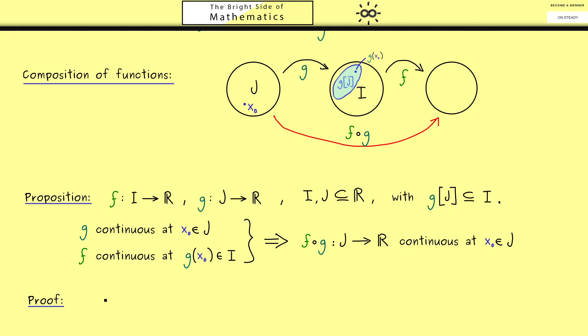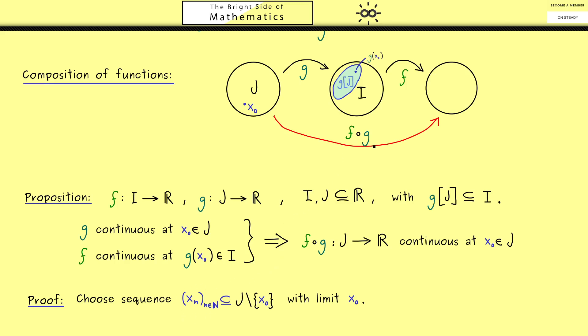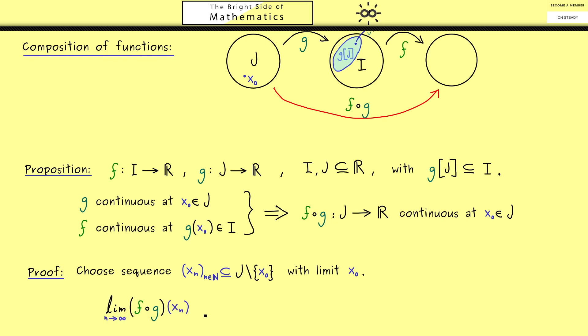Still, I want to use the sequence definition of continuity here. Hence, let's choose a sequence (xₙ) with members from J and limit x₀. And now we consider the limit of the values of xₙ under the composition f after g. Next we show that this exists and is exactly f after g of x₀. First let's use the definition of the composition, so we put g(xₙ) into f.